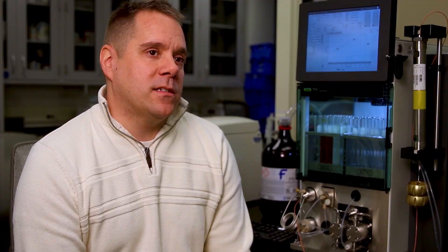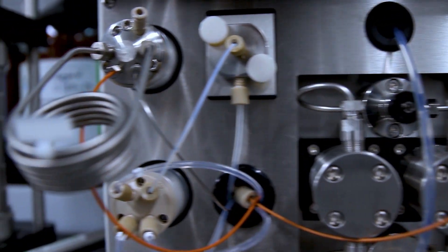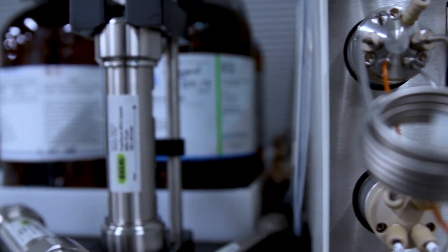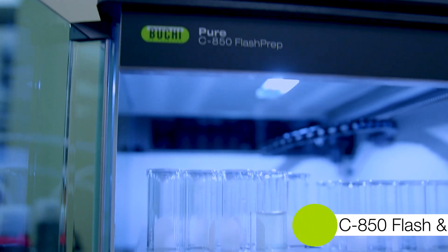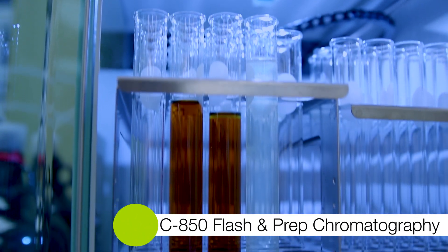The other instrument we have in the laboratory is the C-850, which is basically a flash prep system. For us, it's been really helpful for being able to isolate out the natural products that we're working with. We can run this in different modes, whether it's flash or prep mode, and that really depends on whether we're looking for high purity or larger volumes.